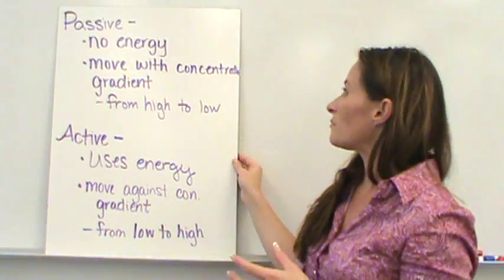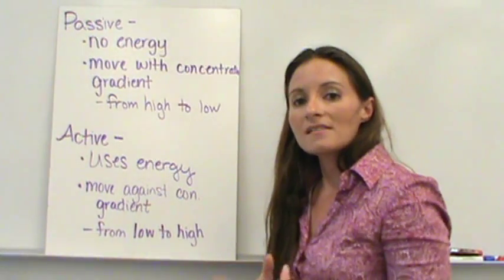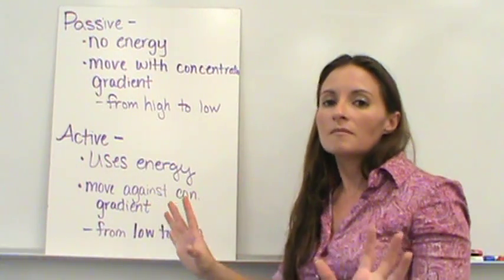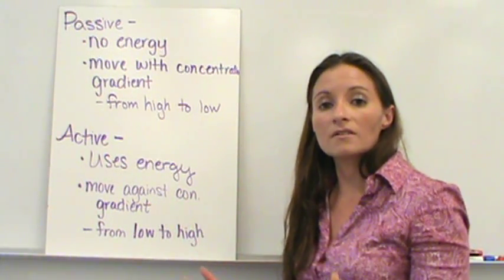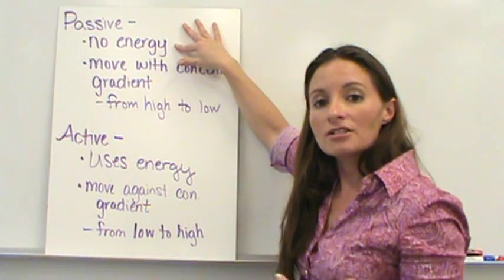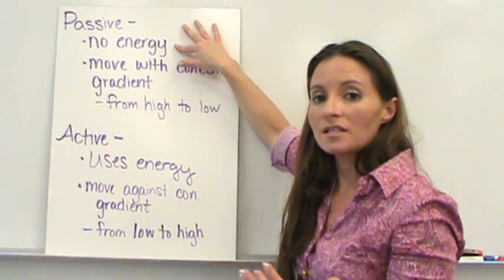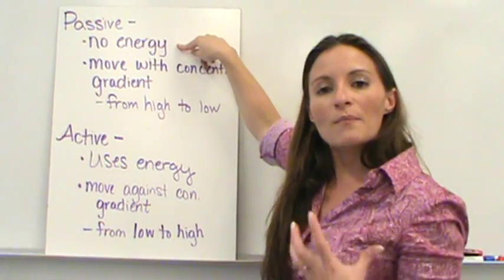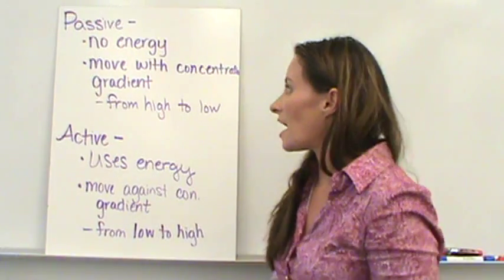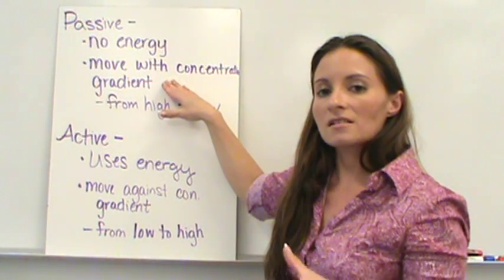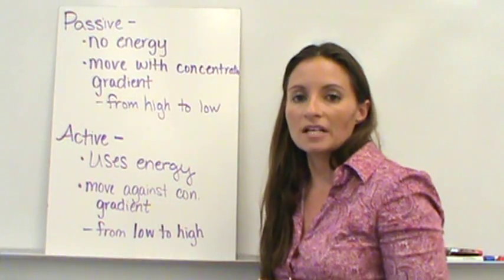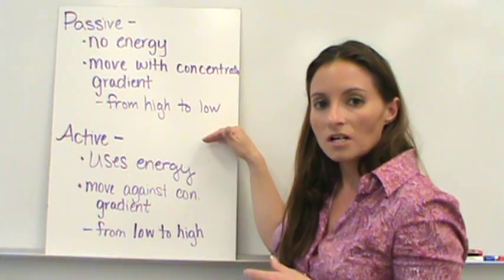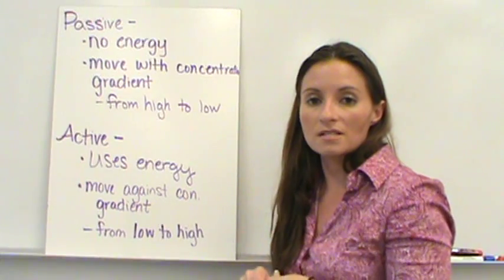Let's look at the difference between passive and active transport. Passive — think of someone being very passive: sitting back, not doing much, exerting no energy. So passive transport requires absolutely no energy. It involves moving things with the concentration gradient — from a high concentration to a lower concentration — until it reaches an equal stage, which is called equilibrium.